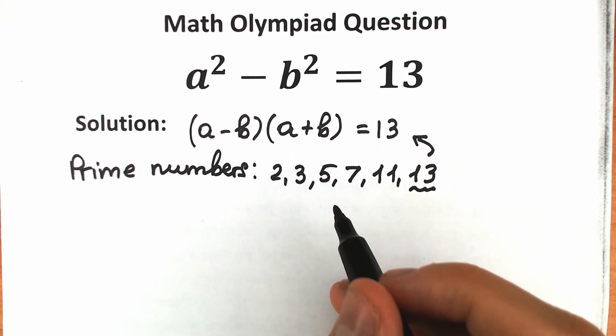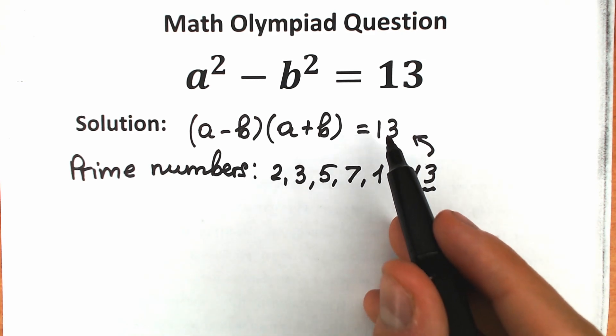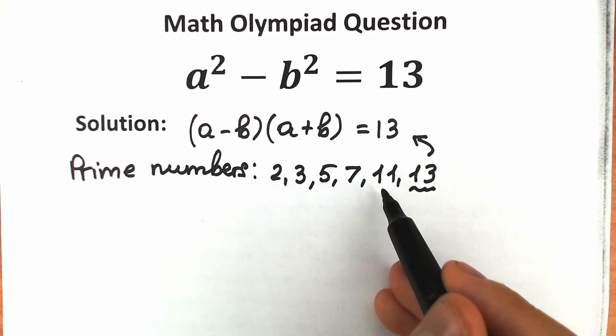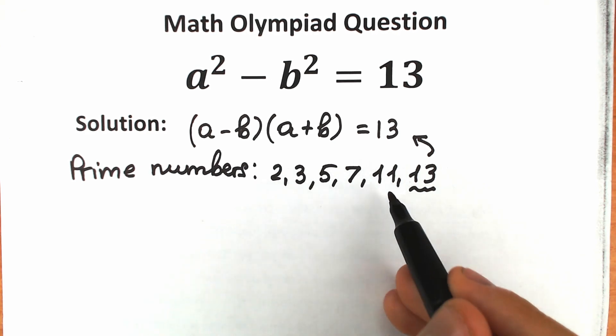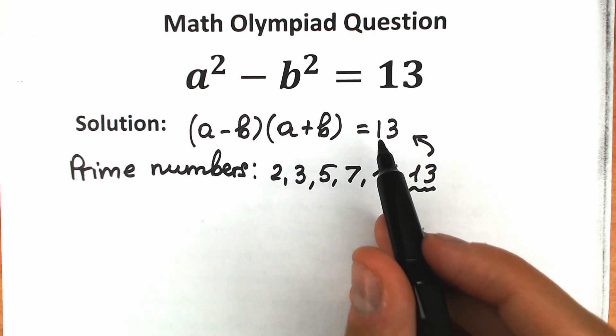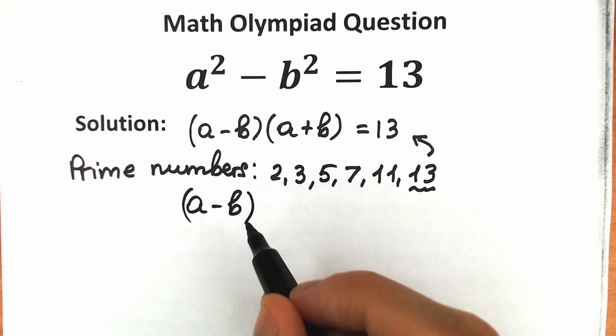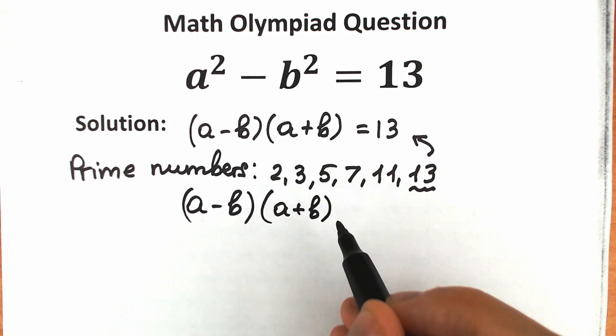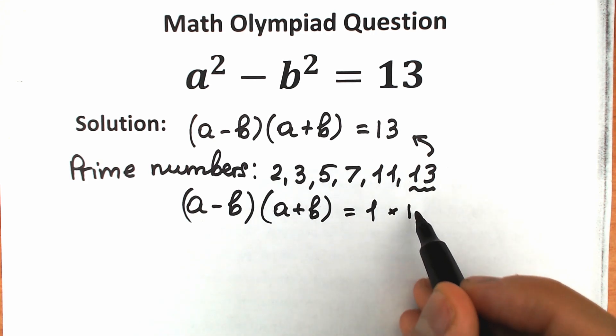And how can we express our prime number? Only one way. We can express it only as 1 times 13. This 11 can be written only as 1 times 11, 1 times 7, 1 times 5. There is no other way. So let's express this 13 as 1 times 13. So we have a minus b times a plus b, and this 13 can be written as 1 times 13.